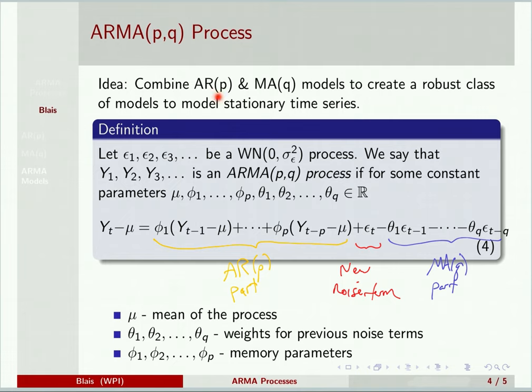And each combination will have its own different autocorrelation structure. And remember, the autocorrelation structure for AR(p) never actually reaches zero, though it does decay to zero. And the MA(q) process has an autocorrelation that falls to zero for lags larger than q. So this gives us a much more robust class of models to model stationary time series.